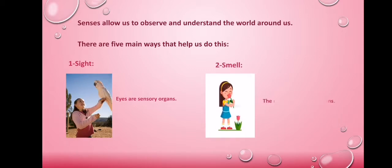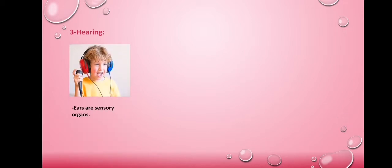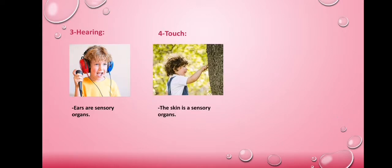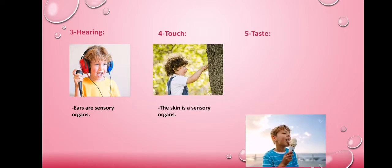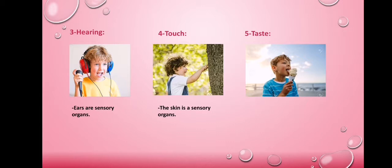Smell — the nose is a sensory organ. Hearing — ears are sensory organs. Touch — the skin is a sensory organ. Taste — we taste food with our tongue, and the tongue is a sensory organ. So we have five sensory organs: eyes, nose, tongue, ears, and skin.